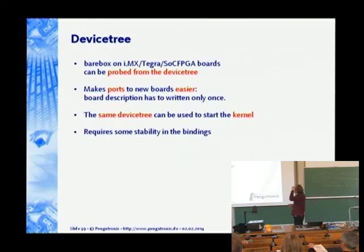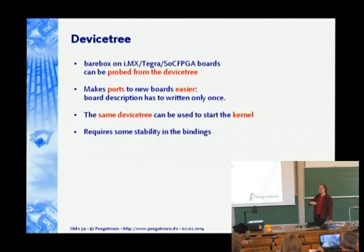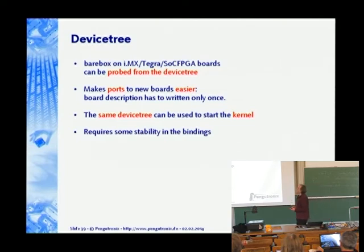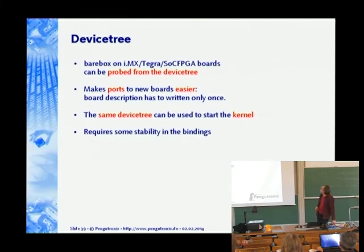There is a downside: device tree depends heavily on stability of bindings. Since we have device tree-based kernels, one of the most common reasons a board refuses to boot is that something changed in the device tree and another component didn't account for it. However, awareness for this has grown a lot in the kernel community recently — kernel developers are really taking care not to change device tree bindings. It has become much better than it used to be.